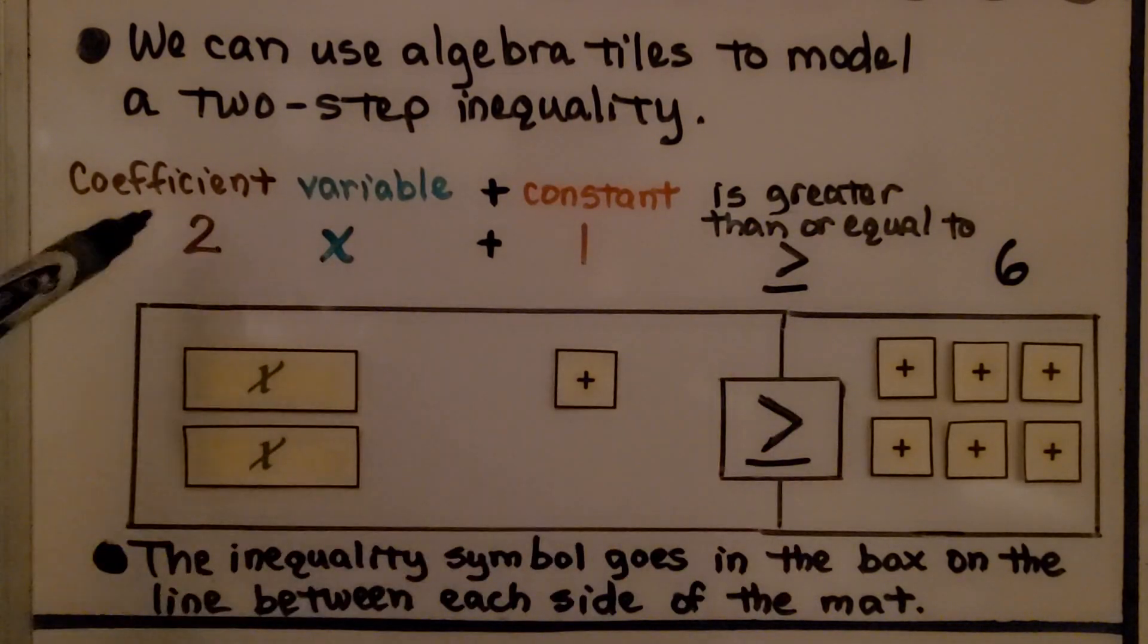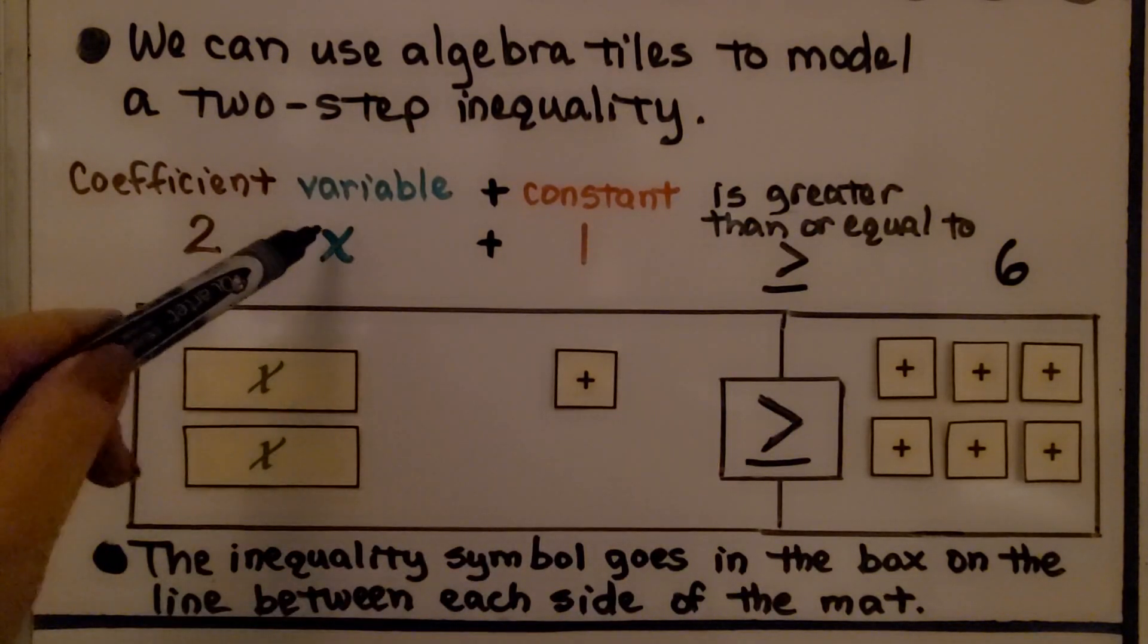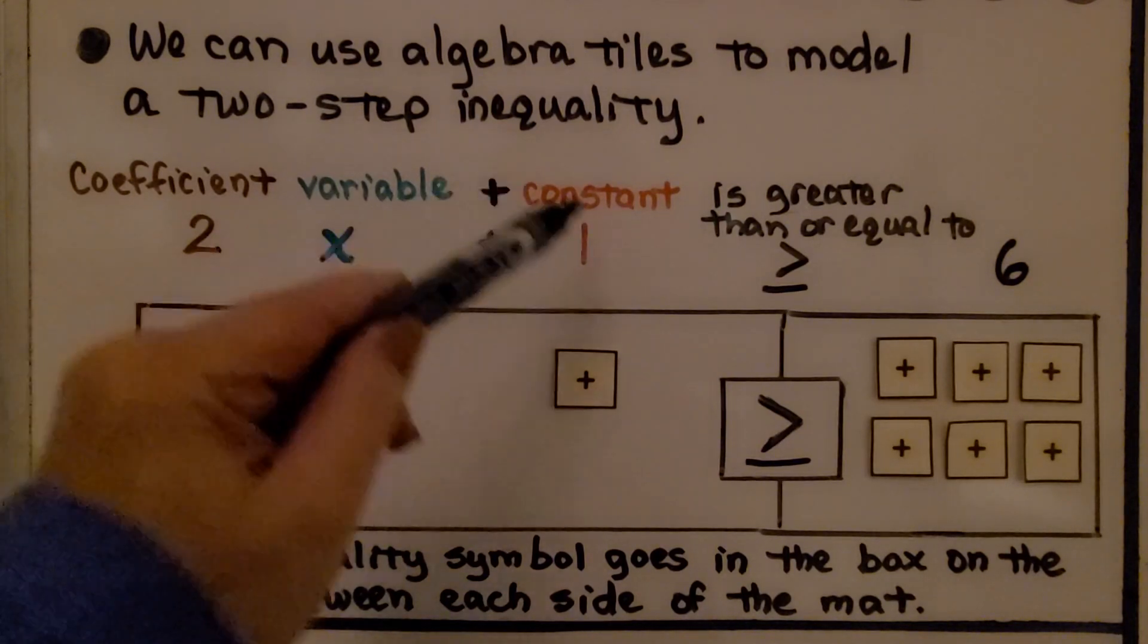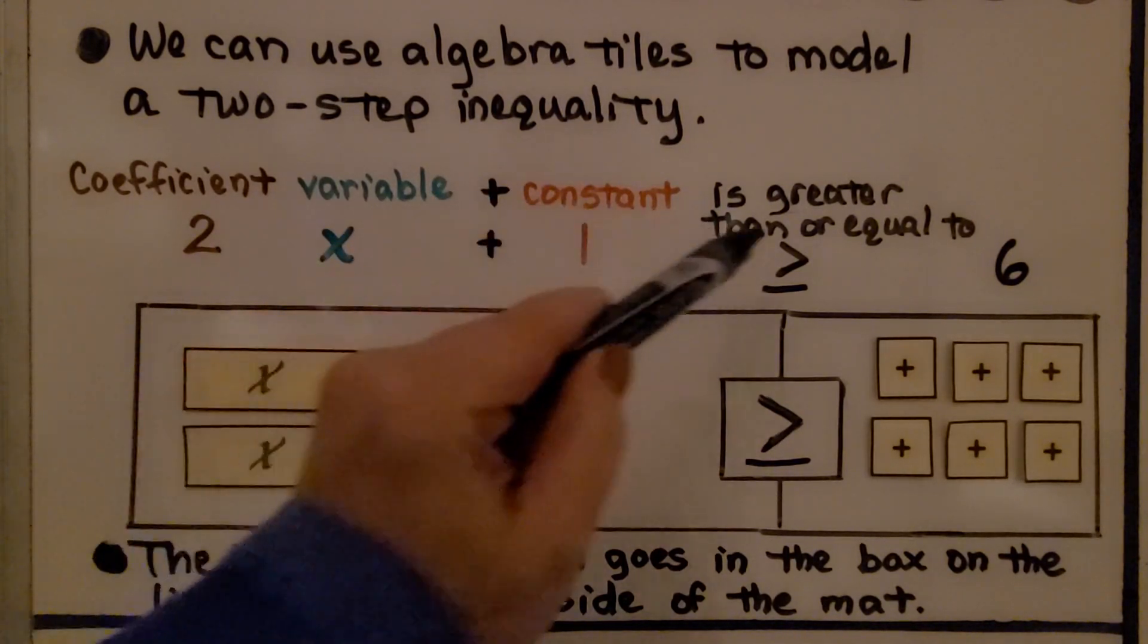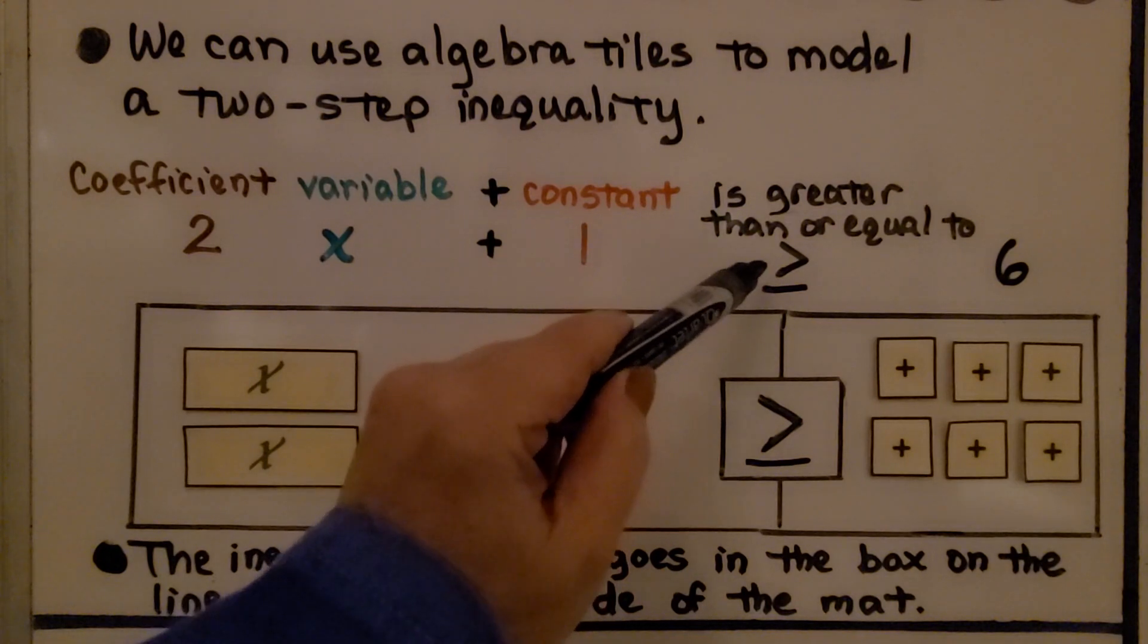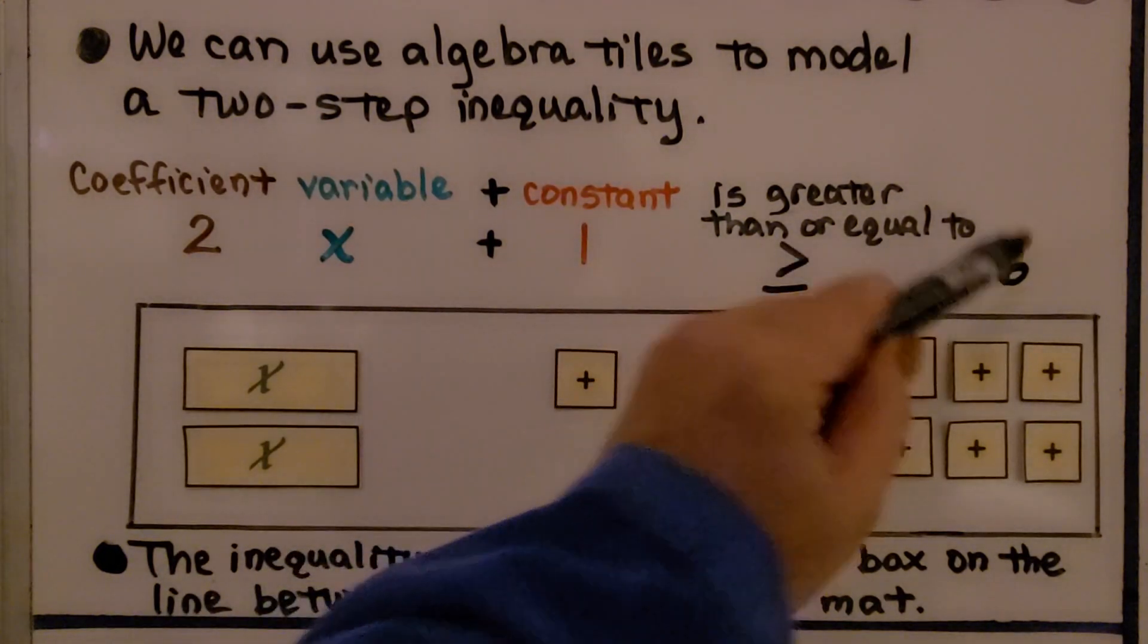So, in an inequality, we have the coefficient, we have the variable, we're adding or subtracting a constant, and we have our inequality symbol. This one is greater than or equal to, and we have 6.